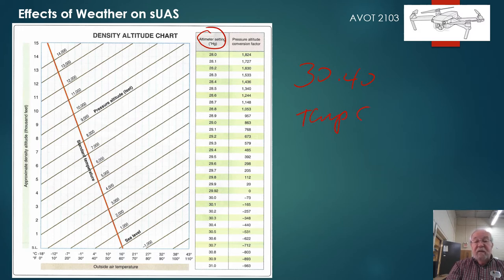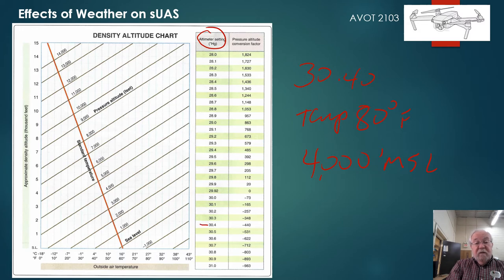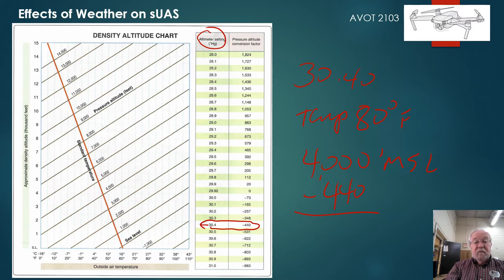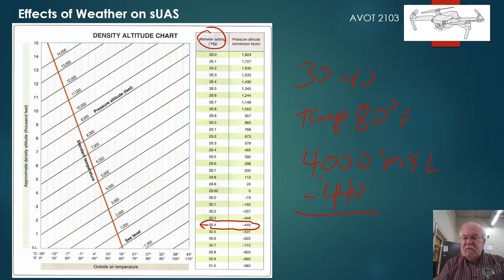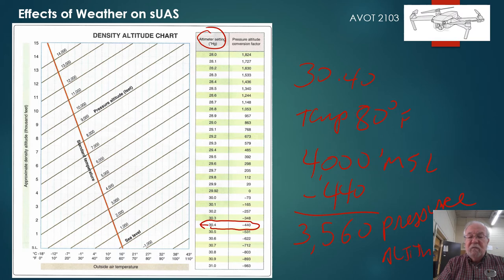For example, the temperature is 80 degrees Fahrenheit and the airport elevation is 4,000 feet MSL. So you go down to the altimeter setting of 30.40 on the chart, and it says subtract 440 feet from your airport elevation. The air is actually thicker than your airport, so the drone would be performing better because you're effectively lower. We subtract 440 from 4,000 and get 3,560. That's our pressure altitude.